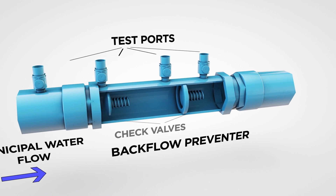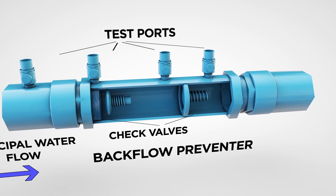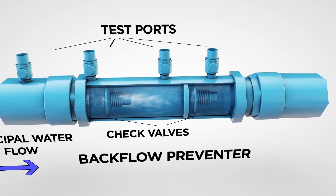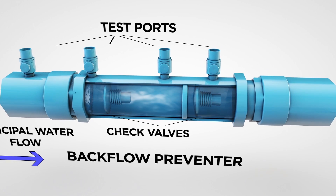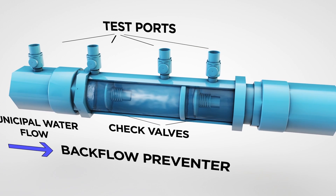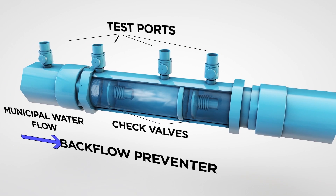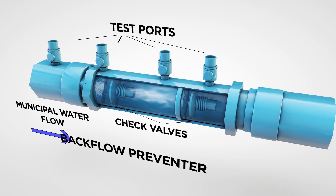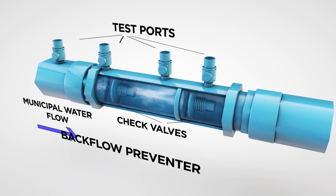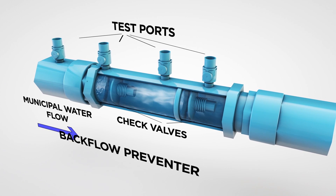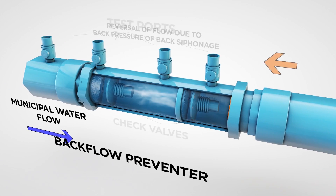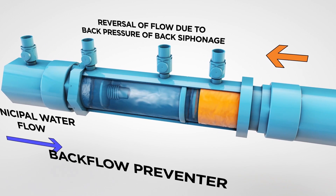By installing a backflow prevention device in properties that are at risk for cross connections, ensures that Halton Region's water distribution system is further protected from any potential contamination.